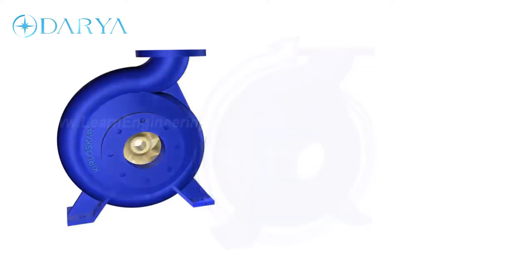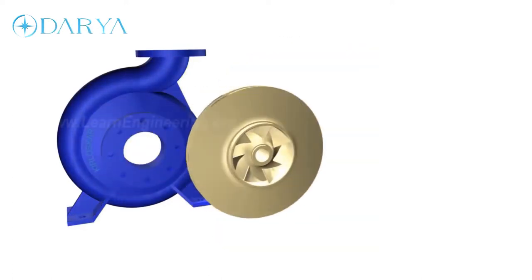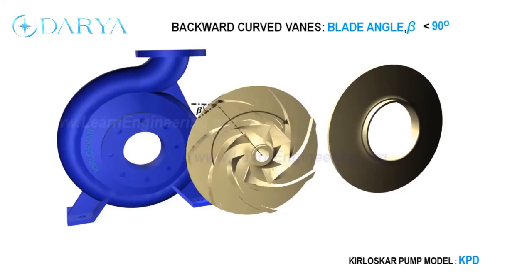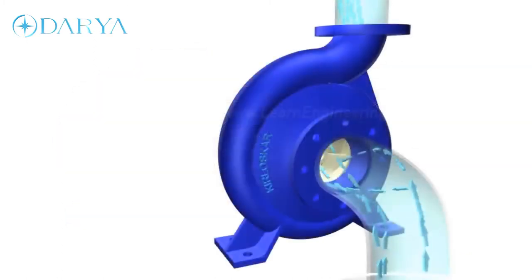Here you can see more details of vanes inside impeller. They are backward curved vanes with state-of-the-art eye configuration. This vanes is extracted from a Kirloskar pump model.